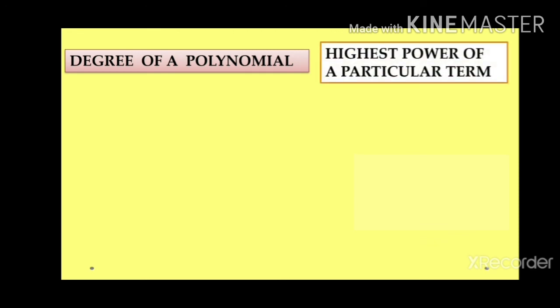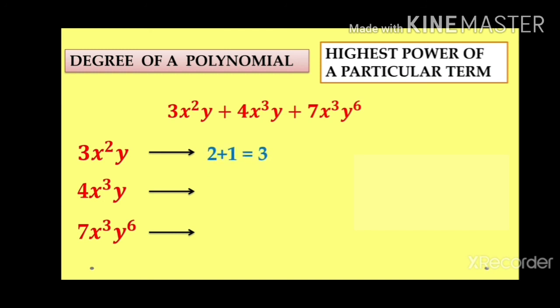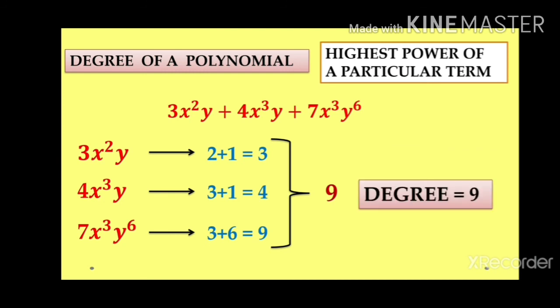Now, degree of a polynomial (algebraic expression). Here you take the highest degree among all terms. Let's take the polynomial 3x²y + 4x³y + 7x³y⁶. For 3x²y: 2 + 1 = 3. For 4x³y: 3 + 1 = 4. For 7x³y⁶: 3 + 6 = 9. Comparing all three terms — 3, 4, 9 — the highest is 9. So the degree of the polynomial is 9.